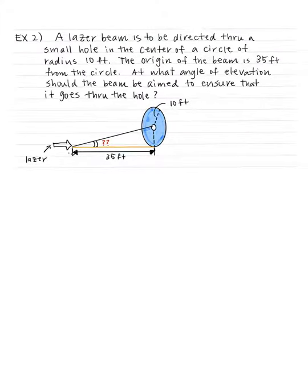Okay, example two. A laser beam is to be directed through a small hole in the center of a circle of radius 10 feet. The origin of the beam is 35 feet from the circle. At what angle of elevation should the beam be aimed to ensure that it goes through the hole? So what I did here was, I already drew a picture of the situation here. And excuse my picture, this is the best that I can draw. I know that word problems tend to be scary for some of you, but this problem is not as bad as you think. So what the question is asking you is to find the angle of elevation. That's all what the question is asking you to find.